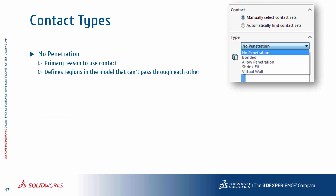In terms of contact types, no-penetration contact is probably the most commonly used. It defines regions in the model that cannot pass through each other — entities may have an initial clearance, be initially touching, and then separate during deformation. Bonded contact welds or glues entities together, used in scenarios where you don't want the entities to translate or rotate with respect to each other, simply transferring loads.